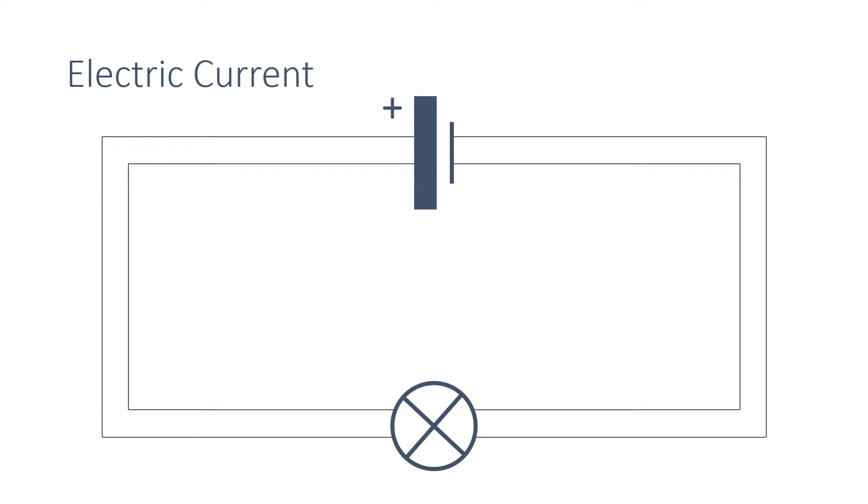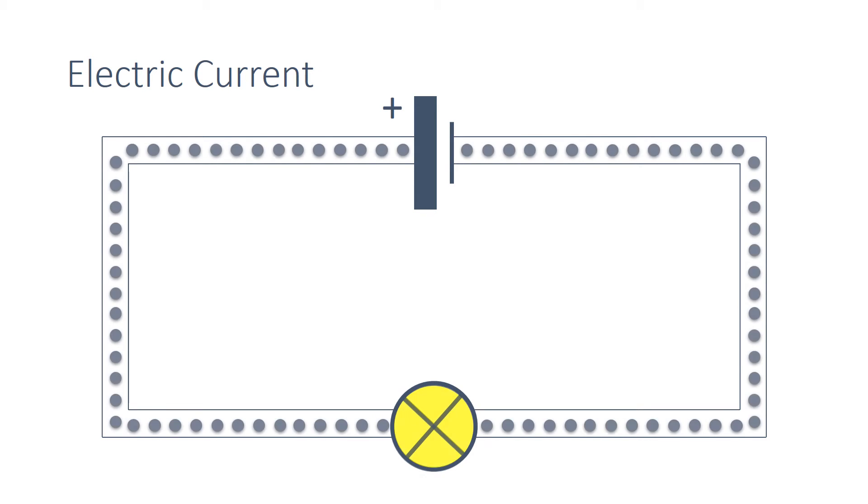When an electric current is turned on, millions of electrons pass through at every second. This flow of charge is an electrical current. For the current to flow in a closed circuit, there must be a source of potential difference, such as a cell, battery, or power pack.